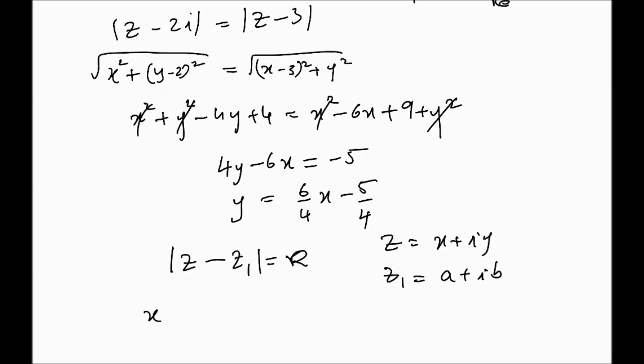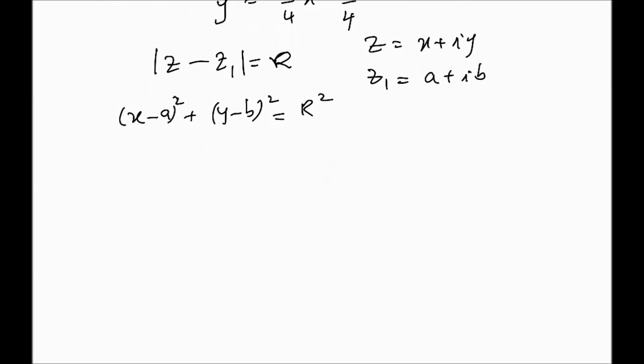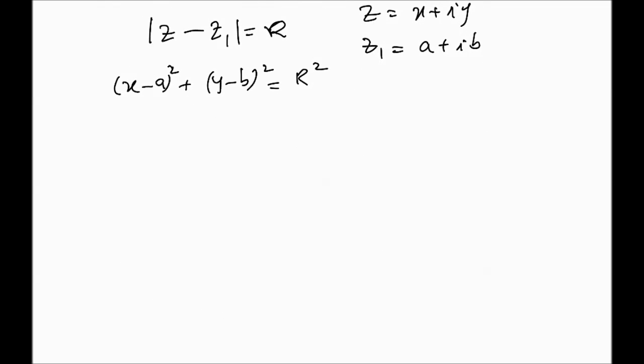Then we say that this is equal to some capital R. This becomes x minus a squared plus y minus b squared equals R squared, if you square both sides. That's the equation of a circle.